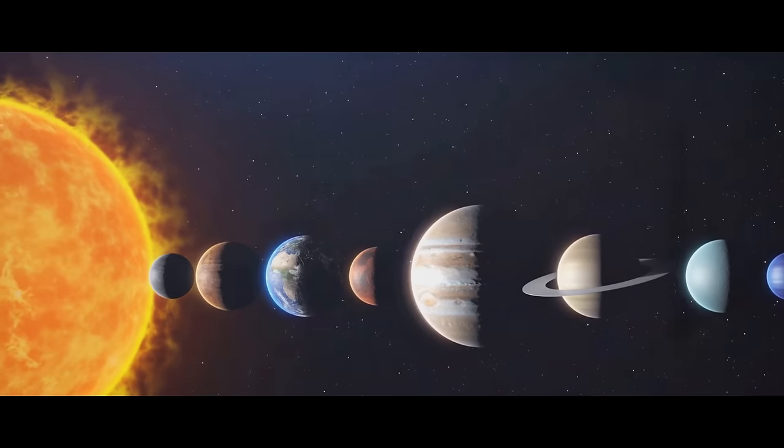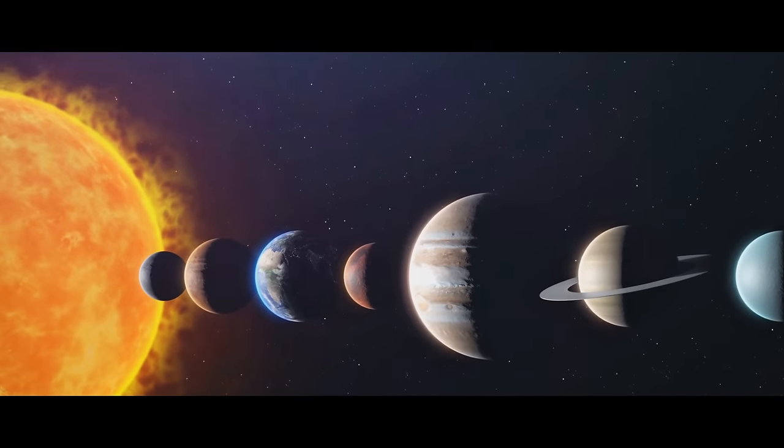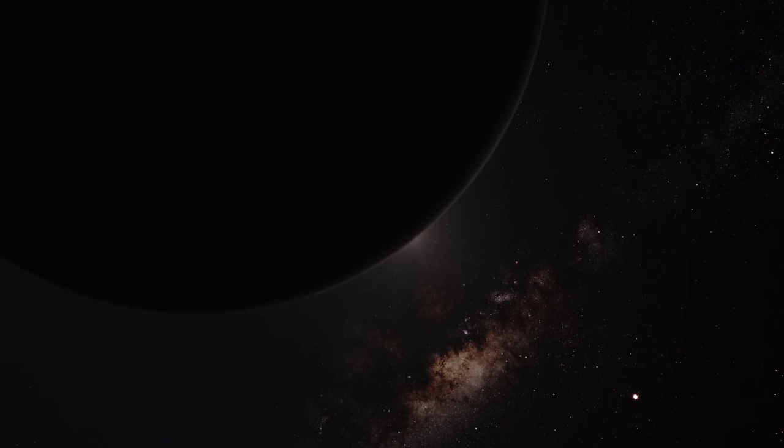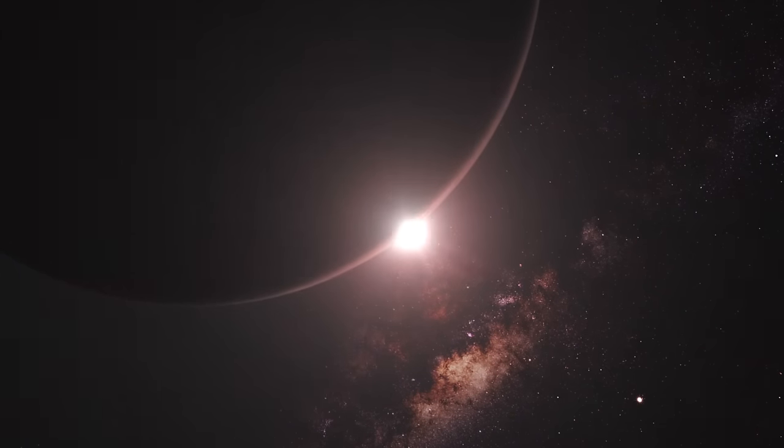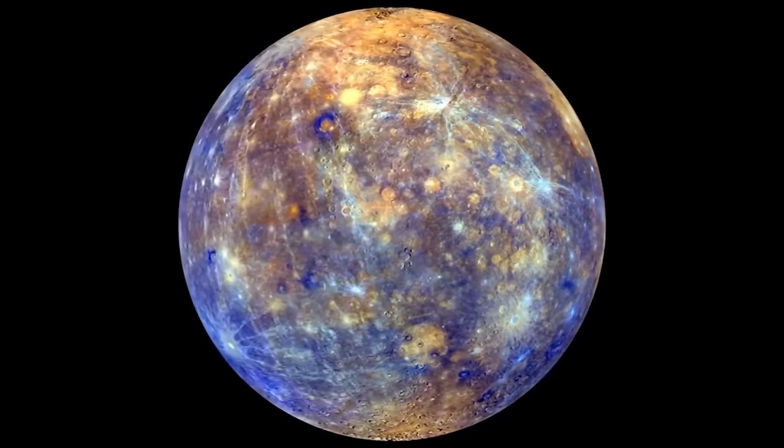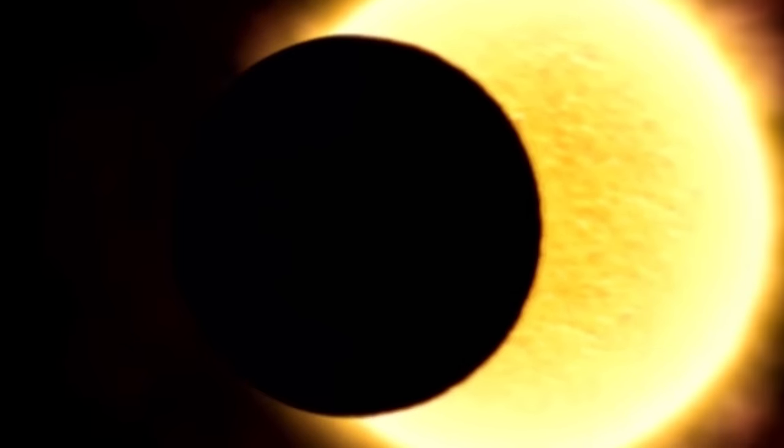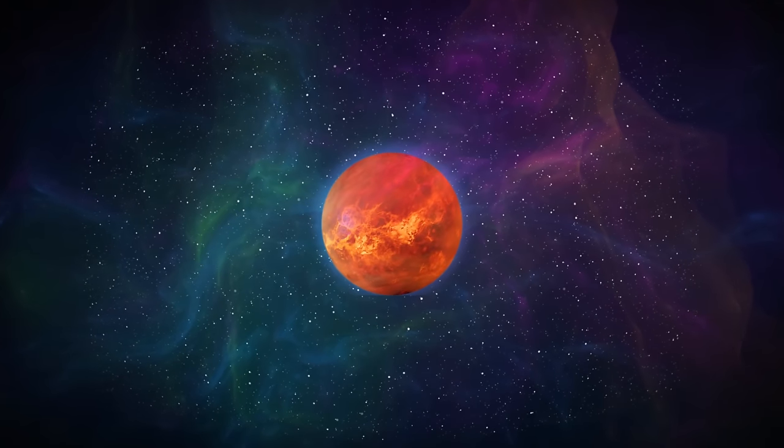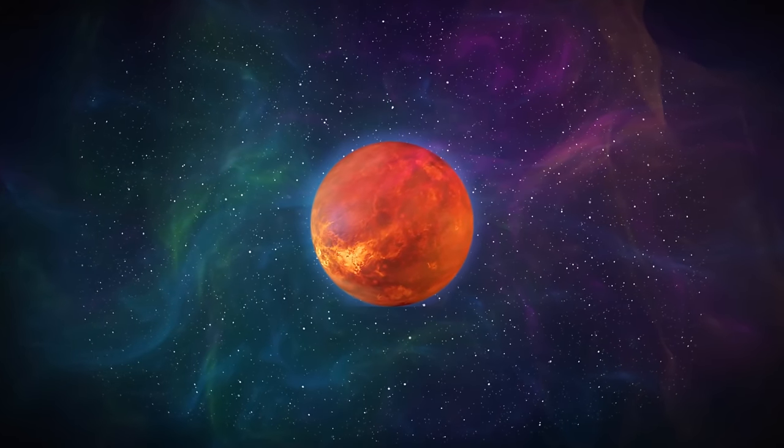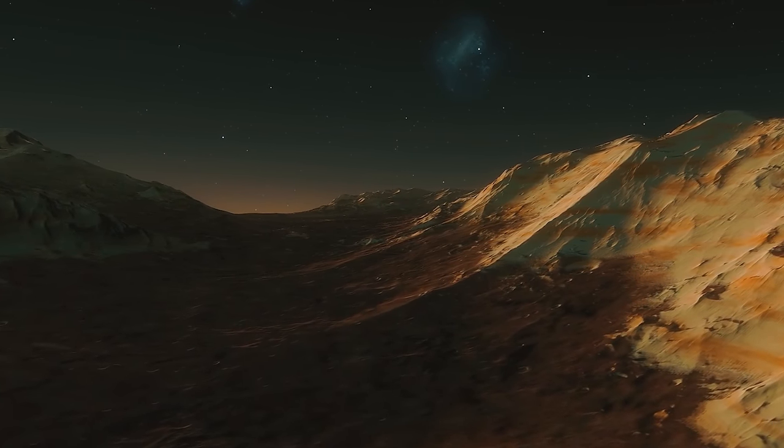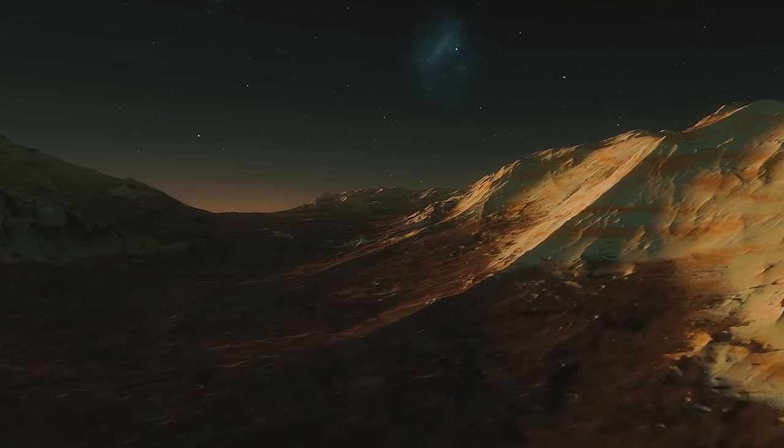Its orbit is a swift 88 days, the shortest of any planet in our solar system. Yet, despite its speedy orbit, a day on Mercury, from sunrise to sunrise, is a slow 59 Earth days. As we leave the scorched surface of Mercury, we set our sights on the second planet in our solar system. Prepare for a journey shrouded in mystery. Welcome to Venus, often called Earth's twin, but don't let the name fool you. This seemingly serene celestial body holds deadly secrets beneath its thick, swirling clouds. Imagine a world where the air is so dense it's like swimming in a sea of lead. That's Venus for you.